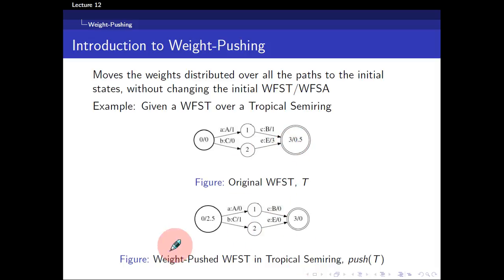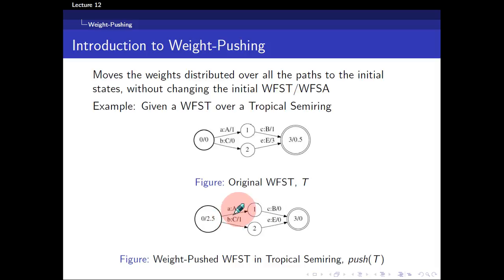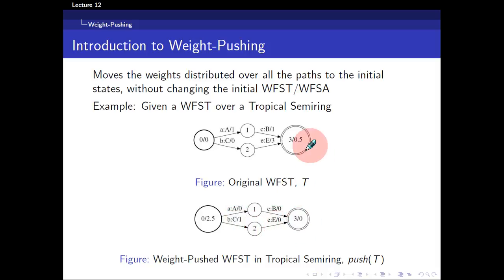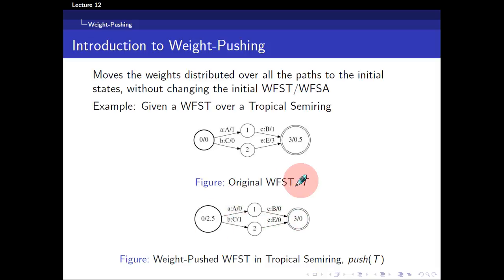If I were to weight-push this transducer — we call it pushed T — if you look at the weight of the paths, taking this particular path again, it would be 2.5 plus 0 plus 0 plus 0, giving 2.5. It's the same as above. And if I take the path below, it would be 2.5 plus 1 plus 0 plus 0, which is 3.5. Same as the original WFST, except that all the weights have been pushed to the front.